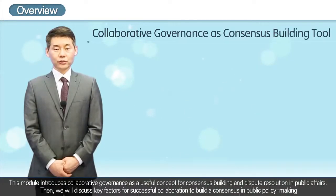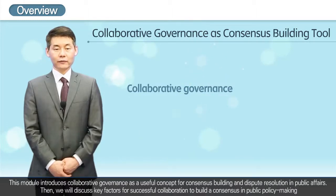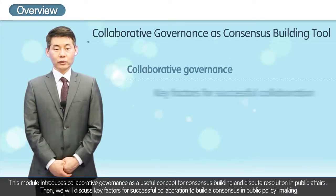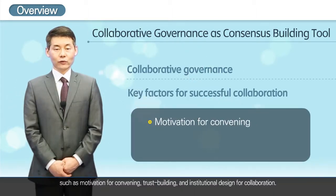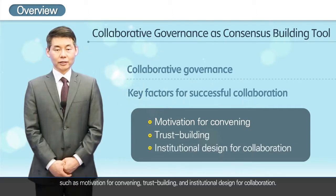This module introduces collaborative governance as a useful concept for consensus-building and conflict resolution in public affairs. We will discuss key factors for successful collaboration to build consensus in public policymaking, such as motivation for convening, trust-building, and institutional design for collaboration.